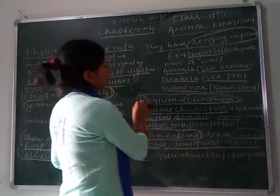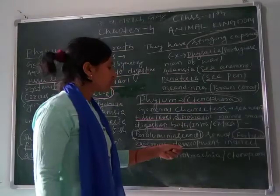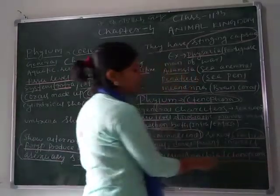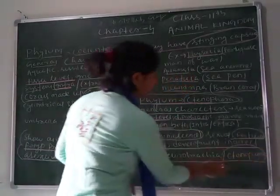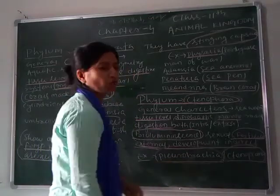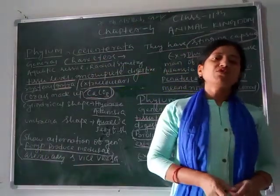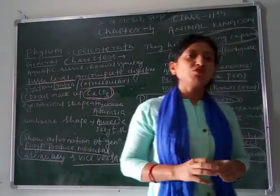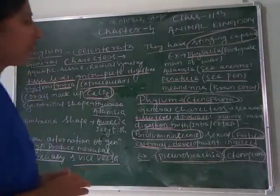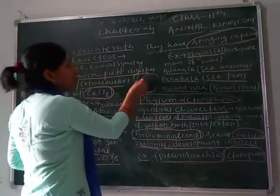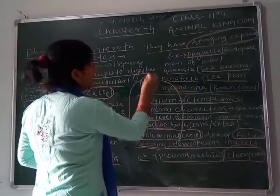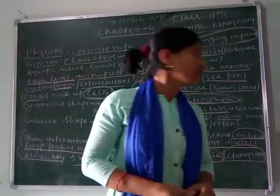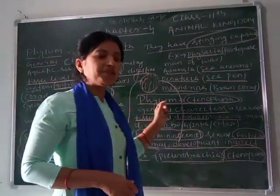The species of phylum Ctenophora show indirect development. Examples are Pleurobrachia and Ctenoplana. They have two long flagella and a comb-like structure called comb plates, with eight rows of comb plates found in the body.